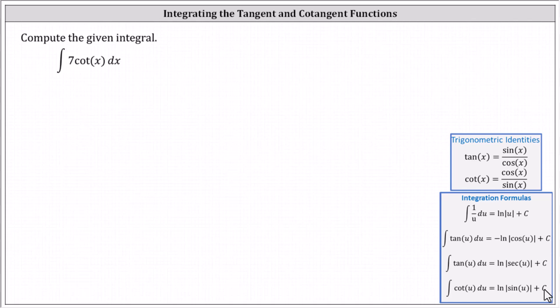Which indicates the integral of seven cotangent x dx equals seven times natural log absolute value of sine x plus c.